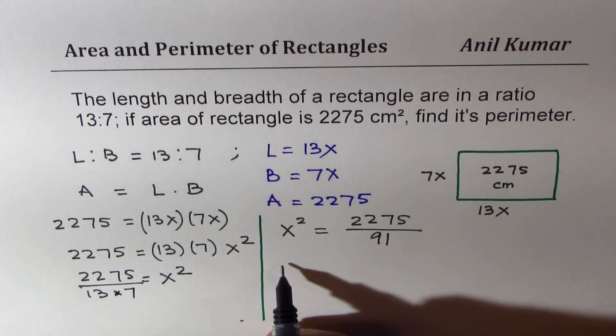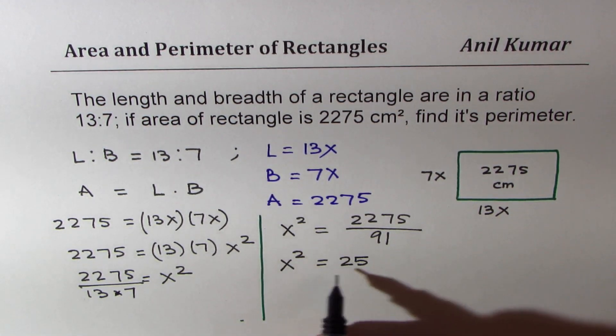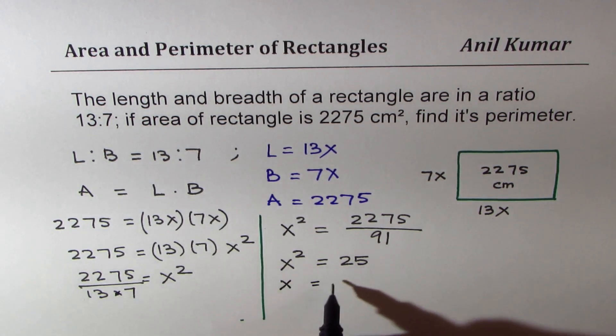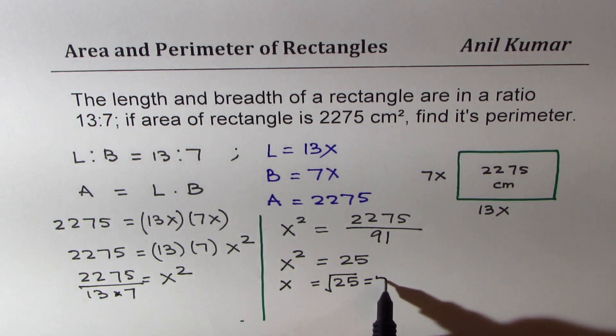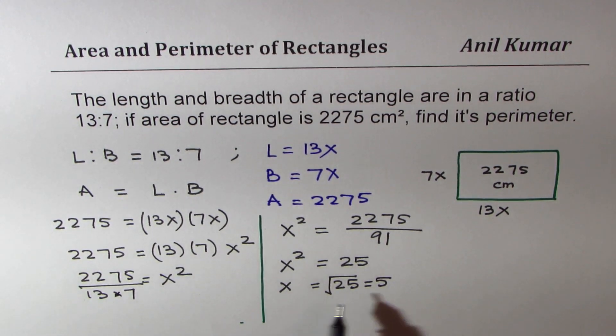So you get x squared equals to 25. If x squared is 25, then x is square root of 25, which is equal to 5. Now this question could have been done without calculator also.